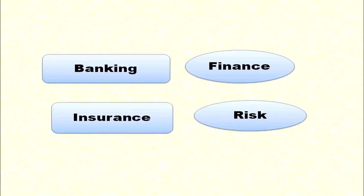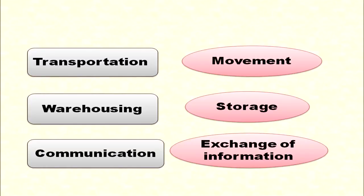Banks provide finance to business organizations. Every business involves risk, and that is covered with the help of insurance. Produced goods have to be moved from the place of production to the place of consumption, and that is possible with the help of transportation. When there is large scale production, you need storage facility — that can be done with the help of warehousing. Every organization should also communicate or exchange information, which is possible with the help of communication services. So these are the business support services.